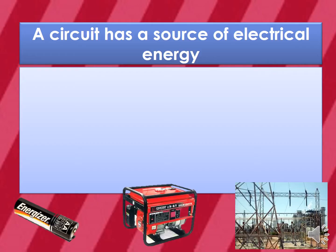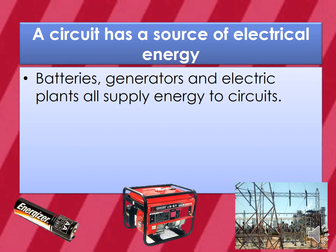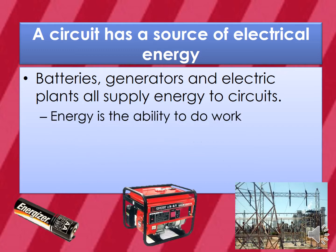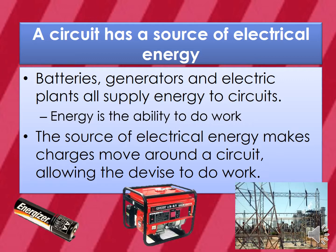A circuit has a source of electrical energy. Batteries, generators, and electric plants all supply energy to circuits. Energy is the ability to do work. The source of electrical energy makes charges move around a circuit, allowing the device to do work.